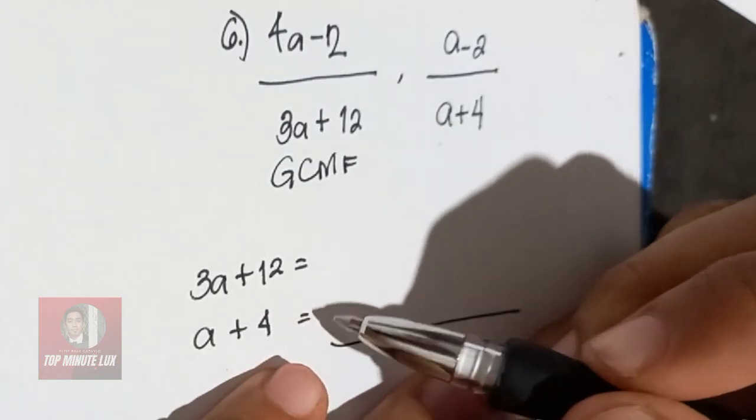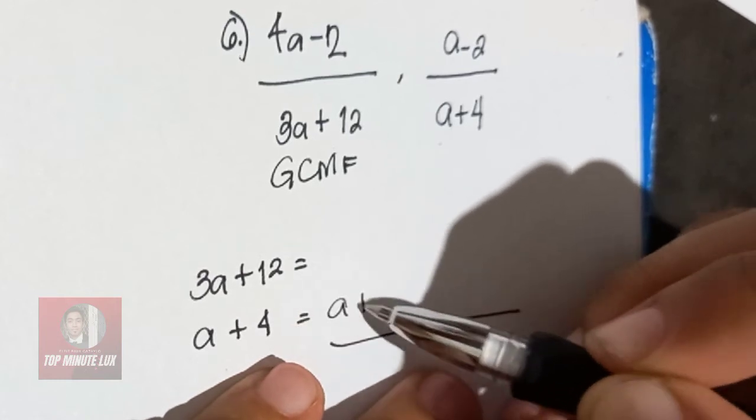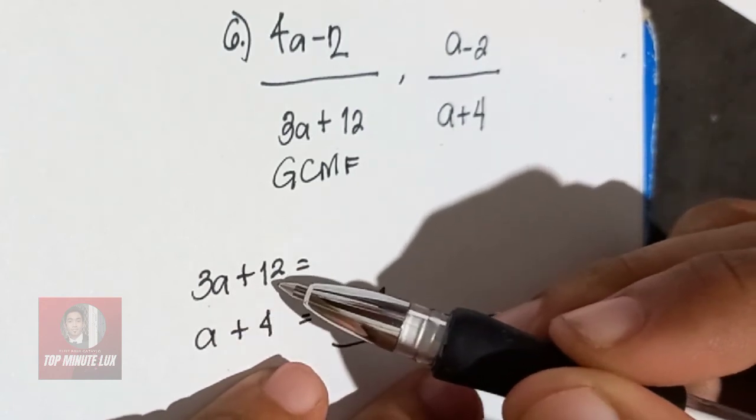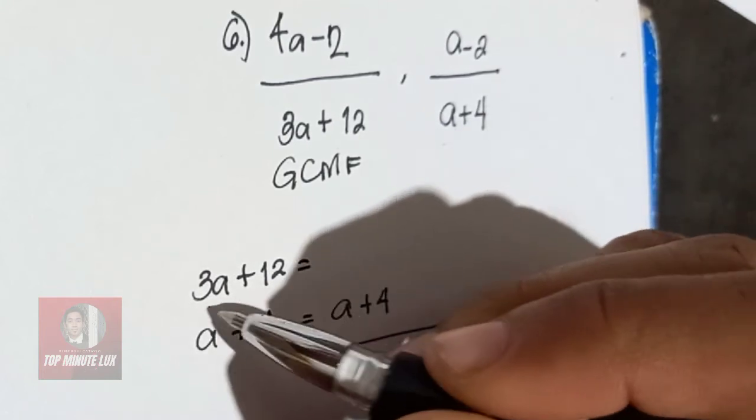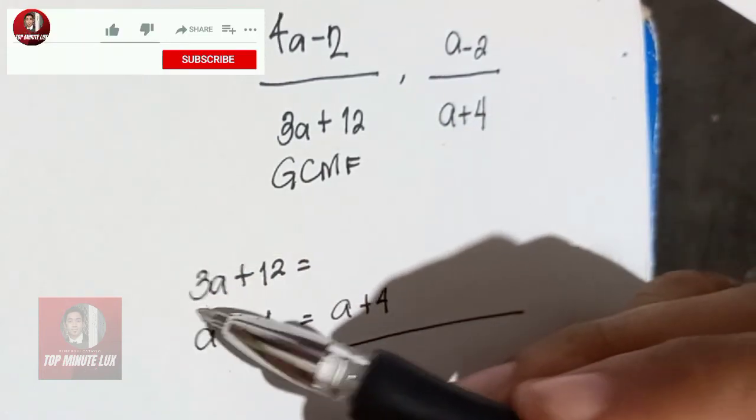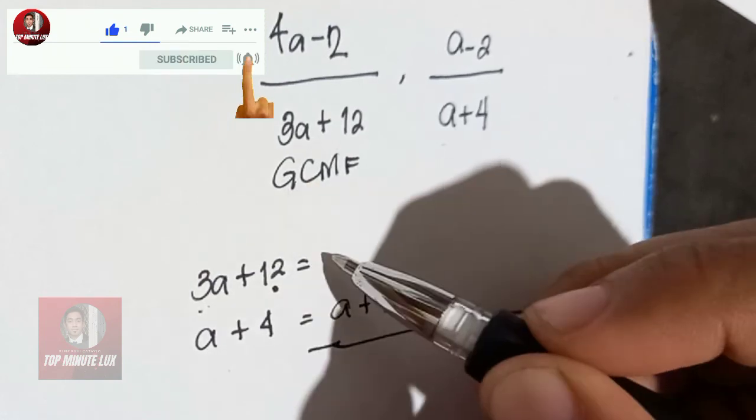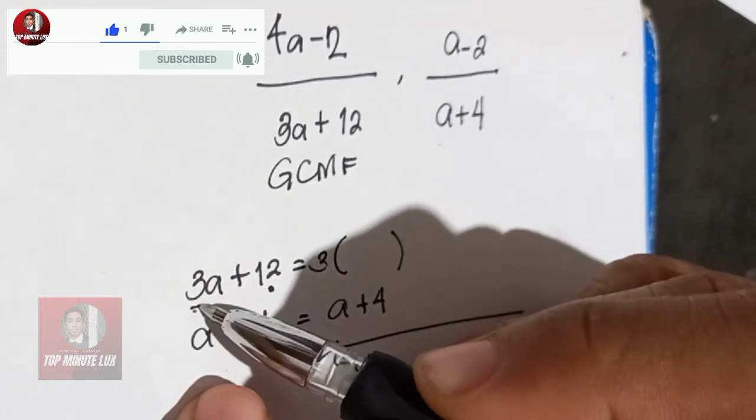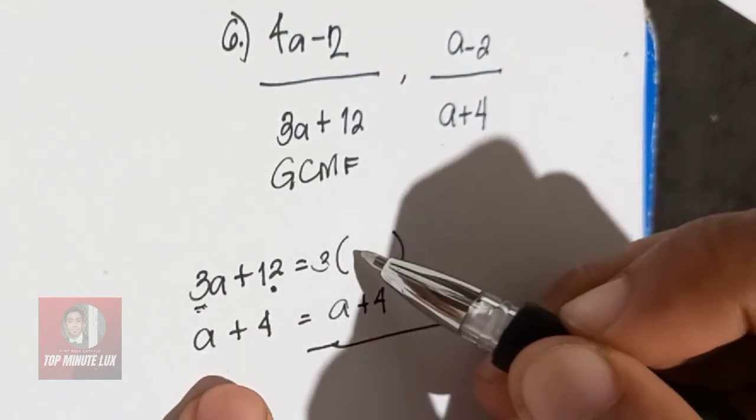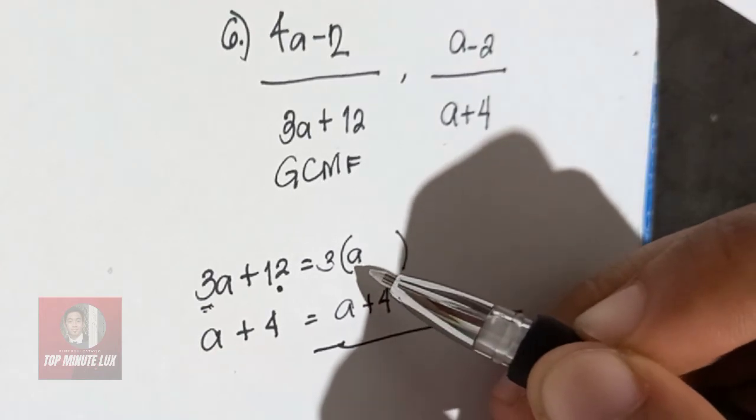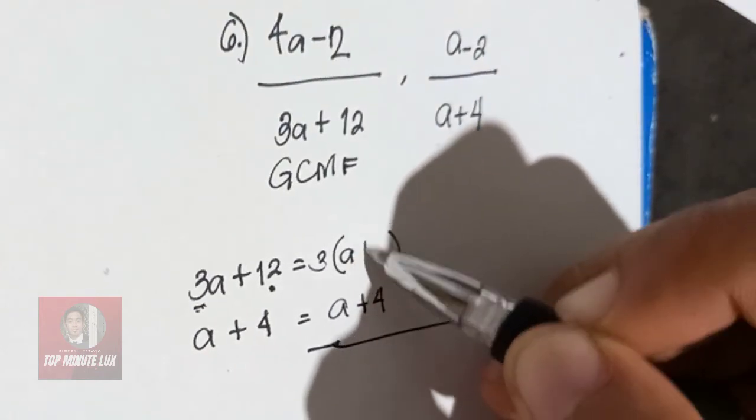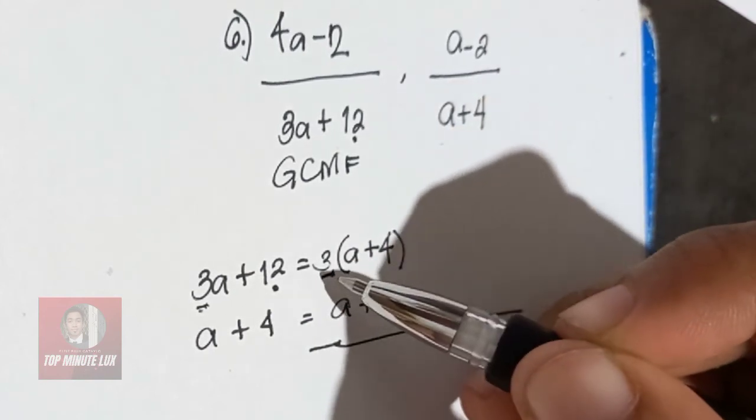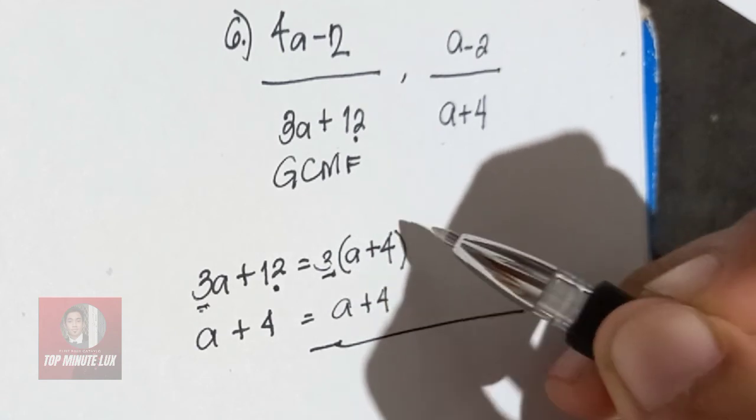So therefore, your answer will be for A plus 4 is just A plus 4, while your 3A plus 12 can still be factored out. How? Simply get the common factor of 3 and 12. So the common is 3. So open close parenthesis, 3. Then 3 divided by 3 will give you 1. Copy the A. It is just, it is already understood that it is 1. Plus, 12 divided by 3 will give you 4. So therefore, your answer will be 3 to the quantity of A plus 4.